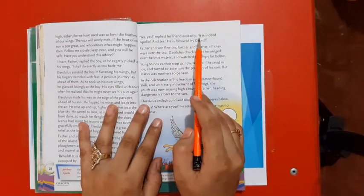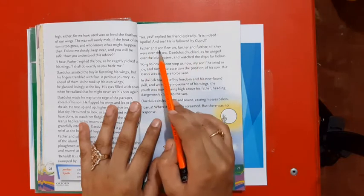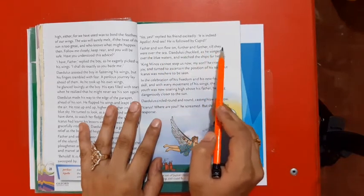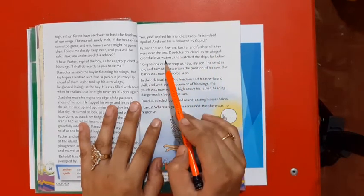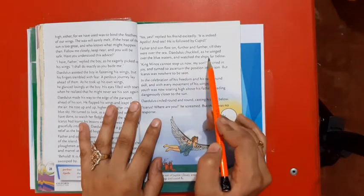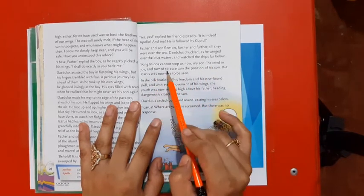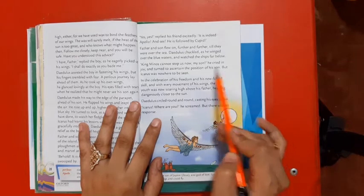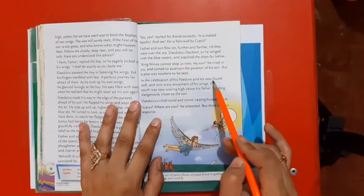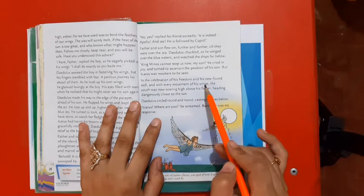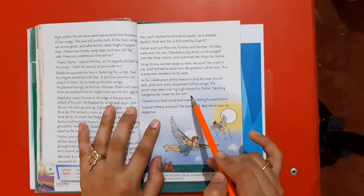Father and son flew on further and further till they were over the sea. Daedalus chuckled as he glided over the blue waters and watched the ships far below. King Minos cannot stop us now, my son, he cried in joy and turned to ascertain the position of his son. But Icarus was nowhere to be seen. In the celebration of his freedom and his newfound skill, and with every movement of his wings, the youth was now soaring high above his father, heading dangerously close to the sun.